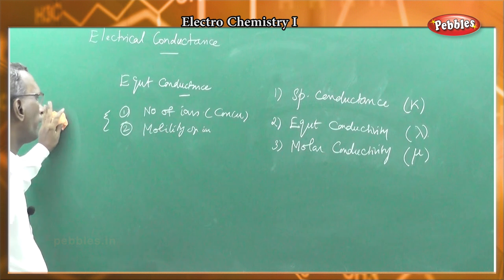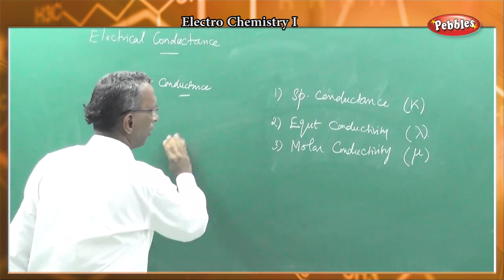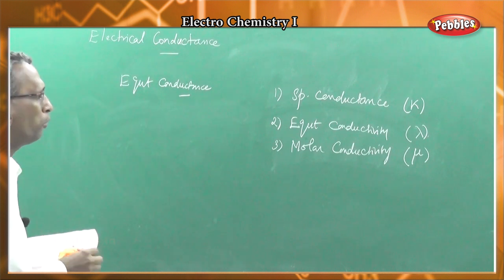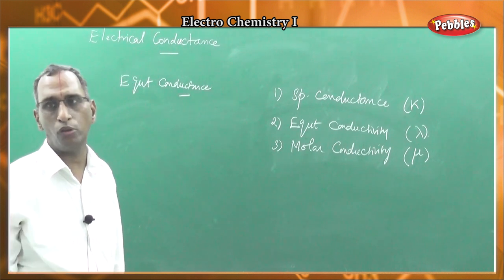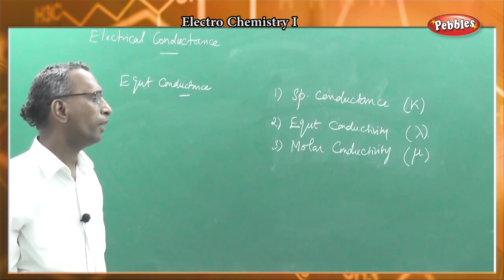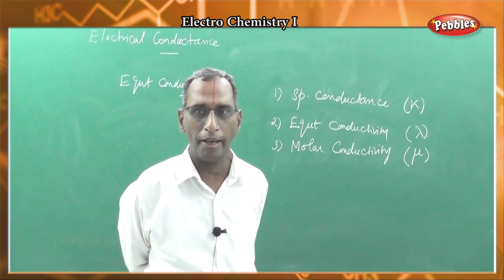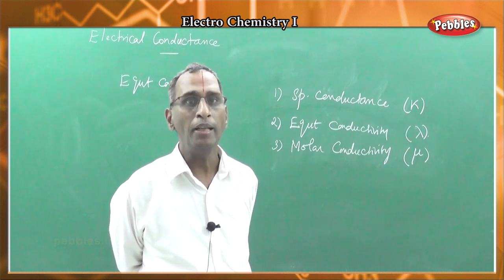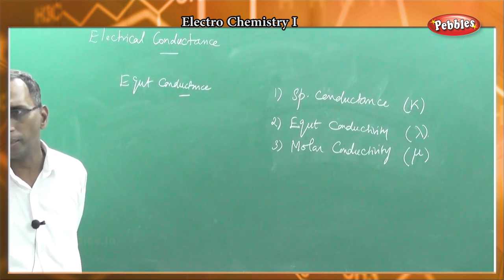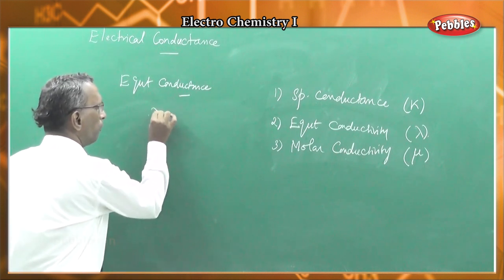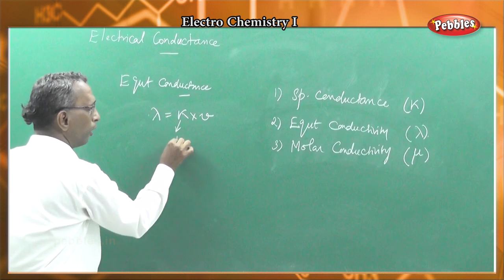The number of ions and the mobility of ions are important factors influencing conductivity. Number of ions is indicated by concentration, and concentration is related to volume. Specific conductance is the conductance offered by unit volume of the solution. Equivalent conductance or equivalent conductivity of an electrolyte is defined as the conductance offered by that volume of the solution which contains 1 gram equivalent of the substance.